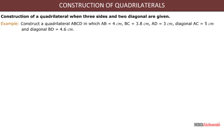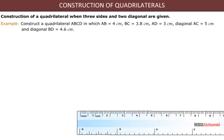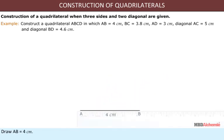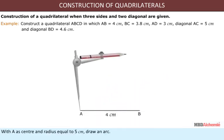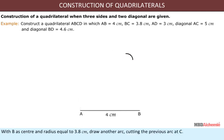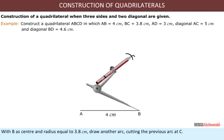Solution: Draw AB = 4 cm. With A as center and radius 5 cm, draw an arc. With B as center and radius 3.8 cm, draw another arc. Then ABCD is the required quadrilateral as shown.